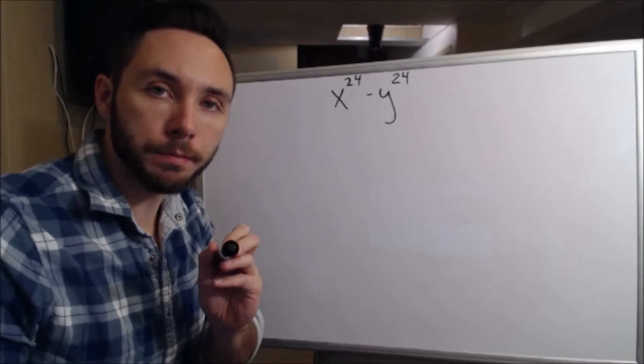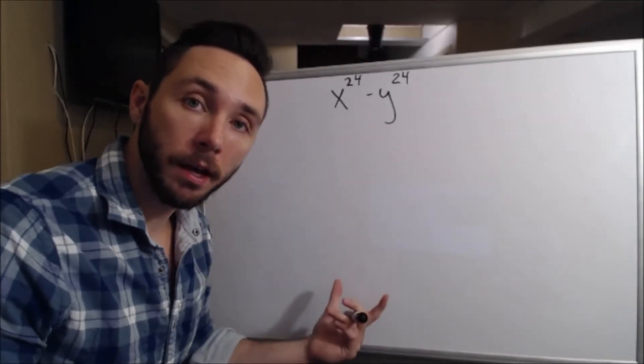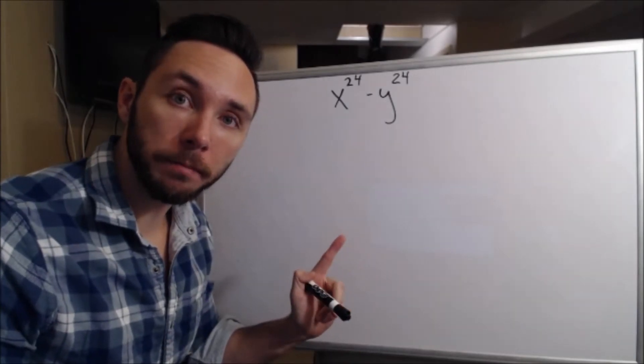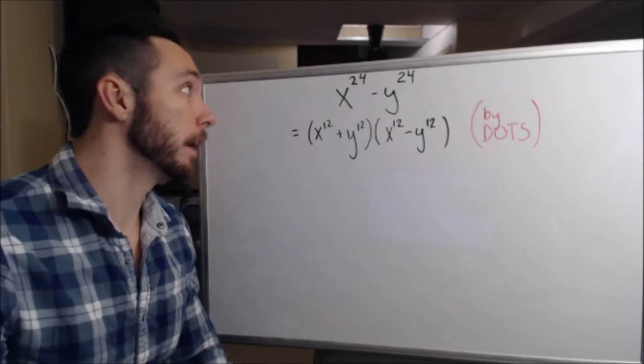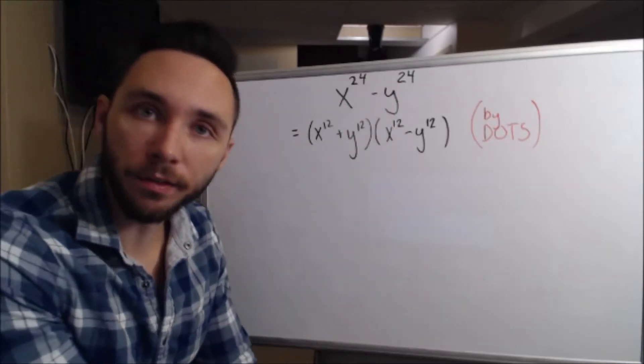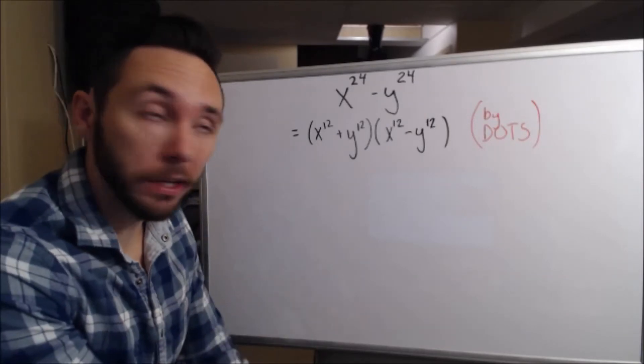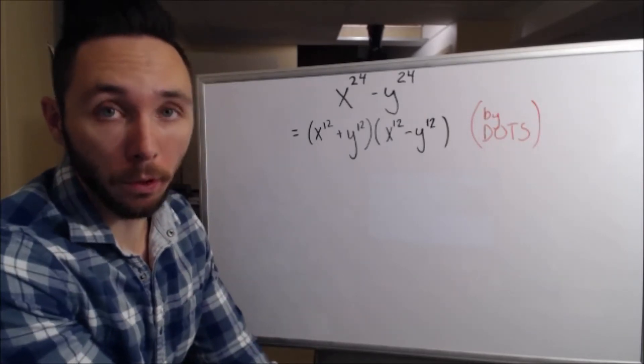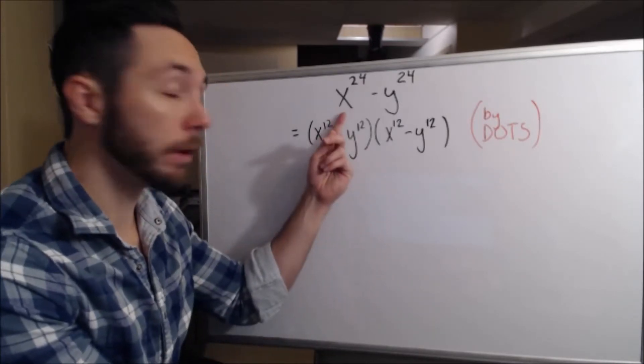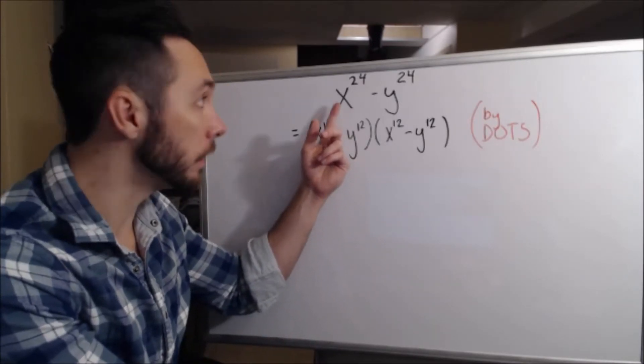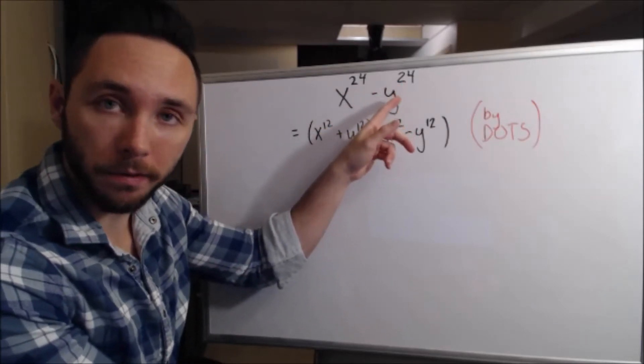Before I get going on this problem, I suggest you pause the video now and attempt factoring this on your own. Three, two, one, my time. The very first thing I notice is that we have a difference here and that these two powers are even, divisible by two. I like looking for opportunities to employ a difference of two squares. So that's the very first thing I did. The square root of x to the 24th is just taking this 24, dividing it by two. Same thing with this y to the 24th, divide that by two.